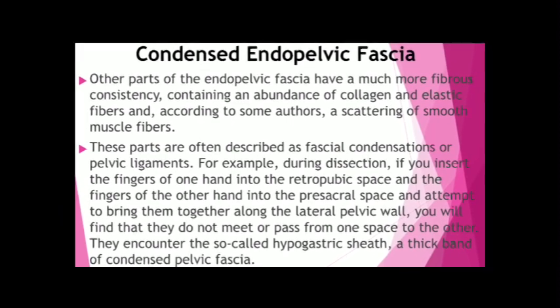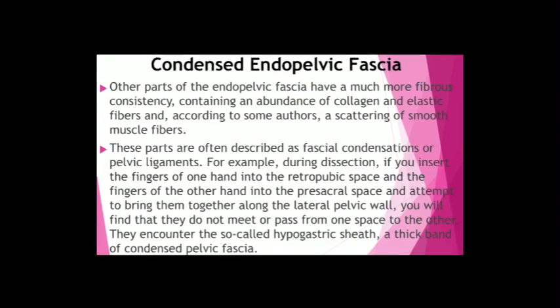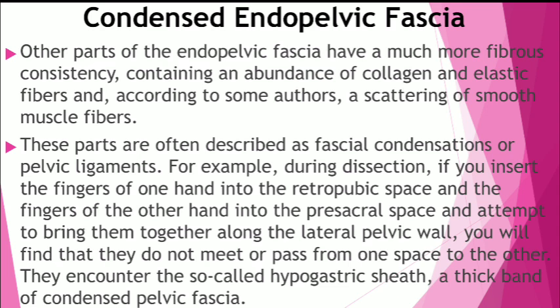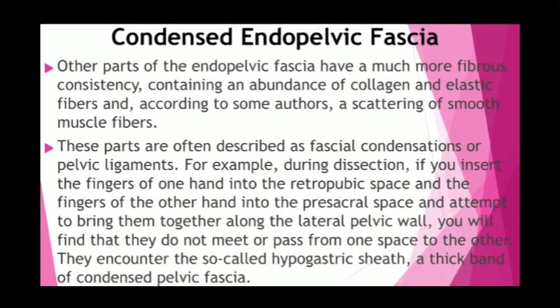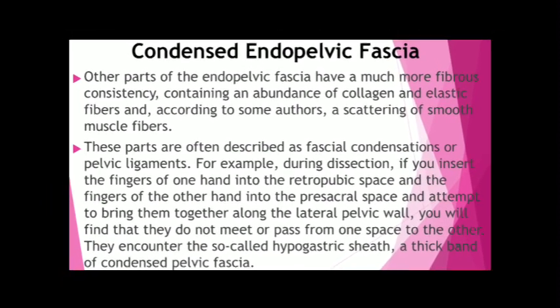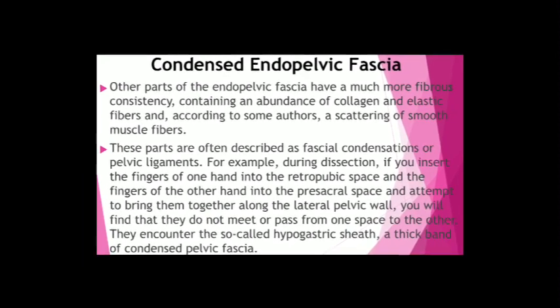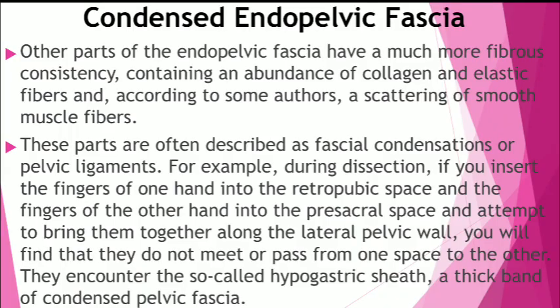In addition to the ischioanal fossa inferior to the pelvic diaphragm, there is a surgically important potential perirectal space in the loose extraperitoneal connective tissue, found superior to the pelvic diaphragm. It is divided into anterior and posterior regions by the lateral rectal ligaments — the rectal stalks — which are the posterior laminae of the hypogastric sheets. These ligaments connect the rectum to the parietal pelvic fascia at the S2, S3, and S4 levels. The middle rectal arteries and rectal nerve plexuses are embedded in the lateral rectal ligaments, making the hypogastric sheet critically important for surgeons.